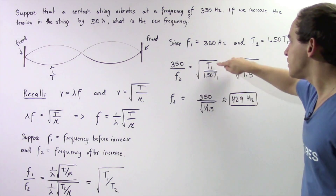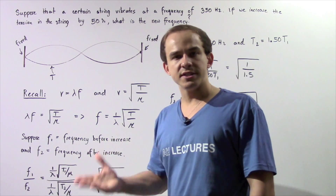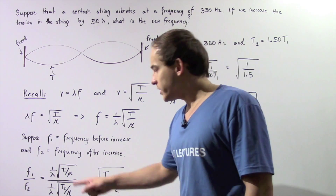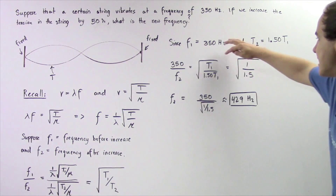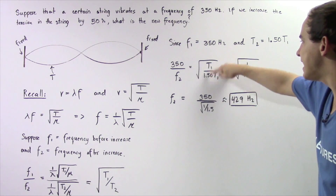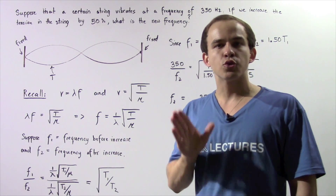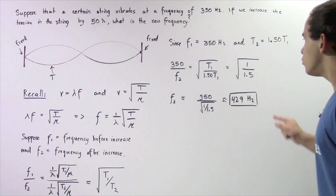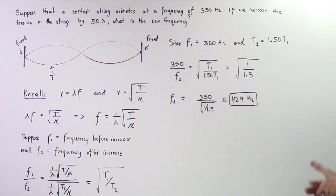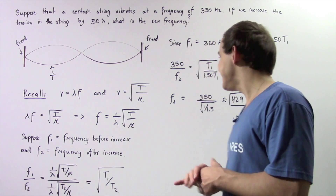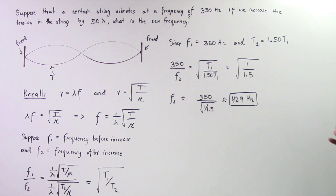Notice where we get the t1 divided by t2. If we go back to the equation, we see that our lambdas are the same and our mu's are the same, so we can cancel those quantities out — and that's exactly where we get this relationship. Now we can also cancel the t1s: we have t1 on top and t1 on the bottom, so those cancel. We're left with 350 divided by f2 is equal to the square root of 1 divided by 1.5. We then rearrange this equation and solve for f2. The new frequency f2 is equal to 350 divided by the square root of 1 divided by 1.5.